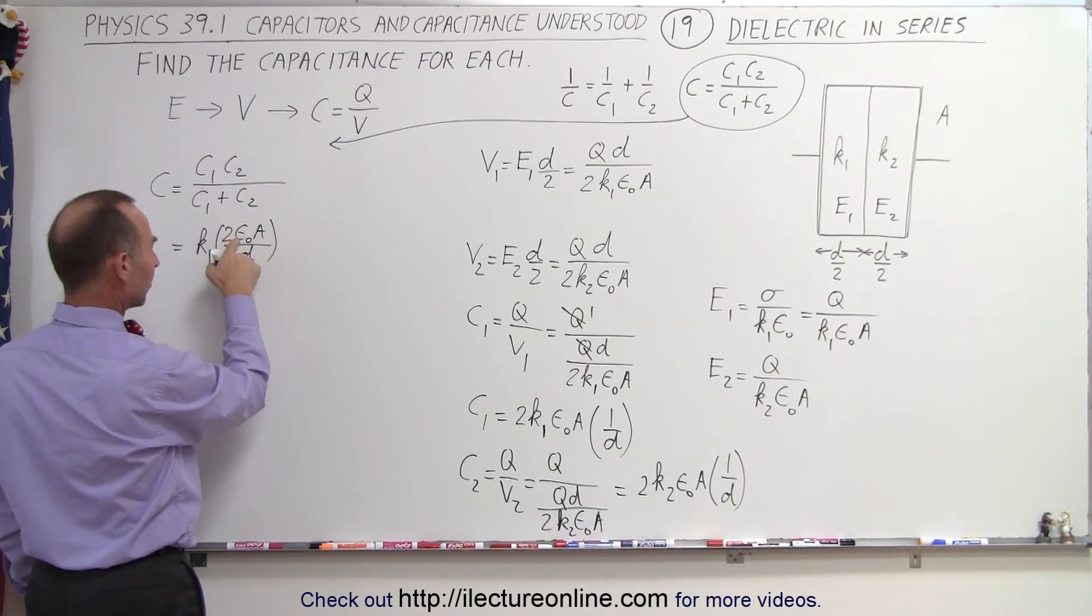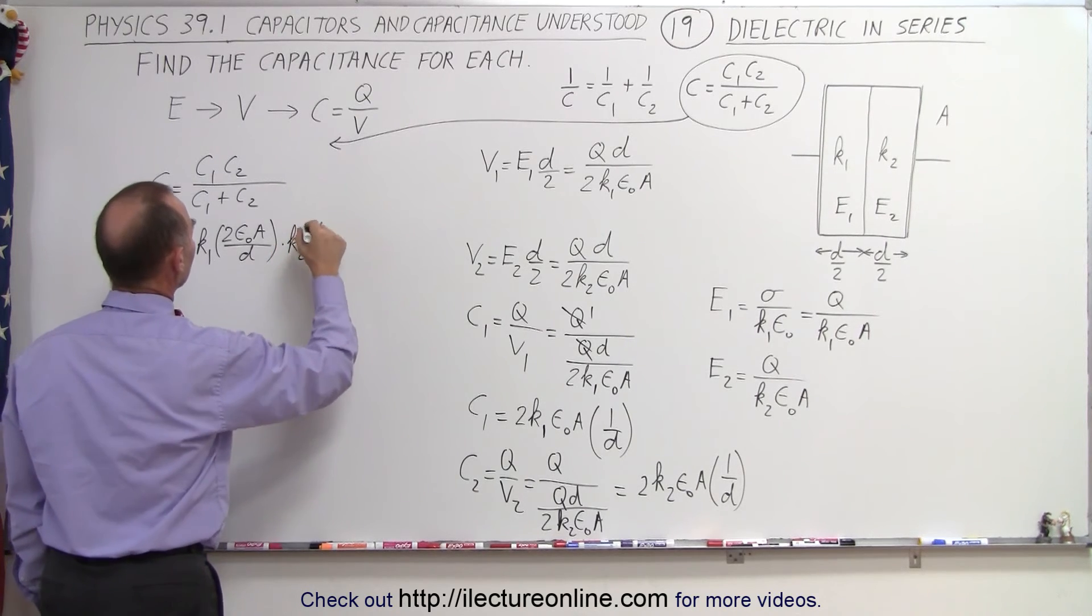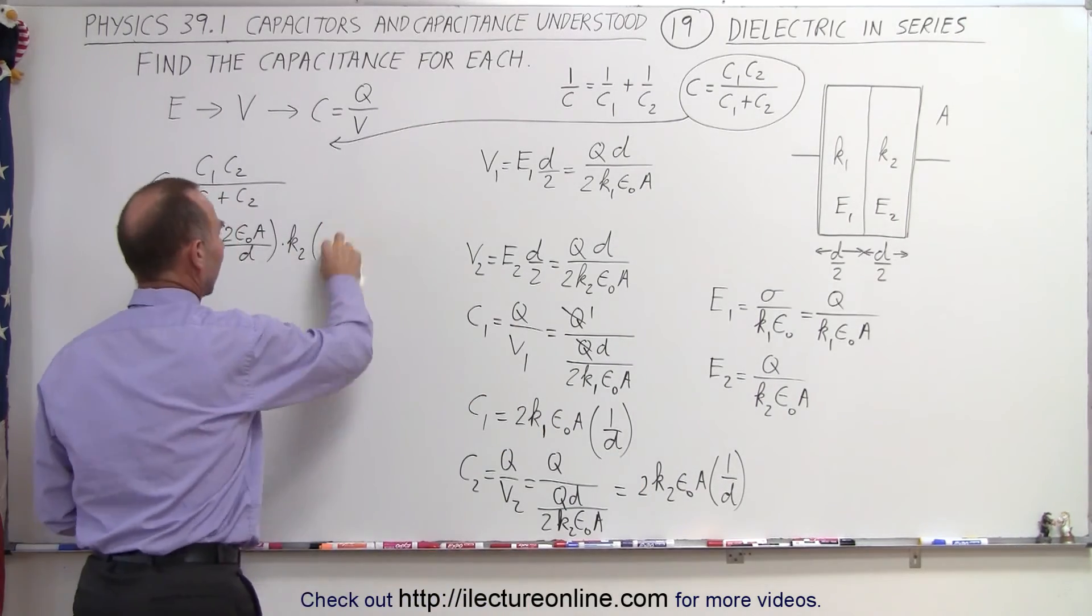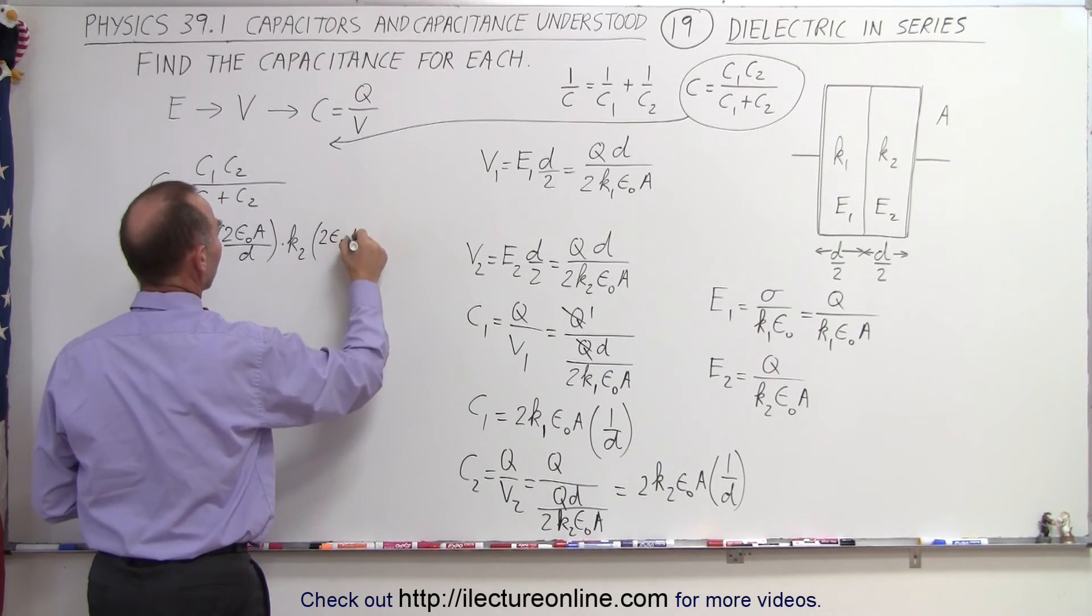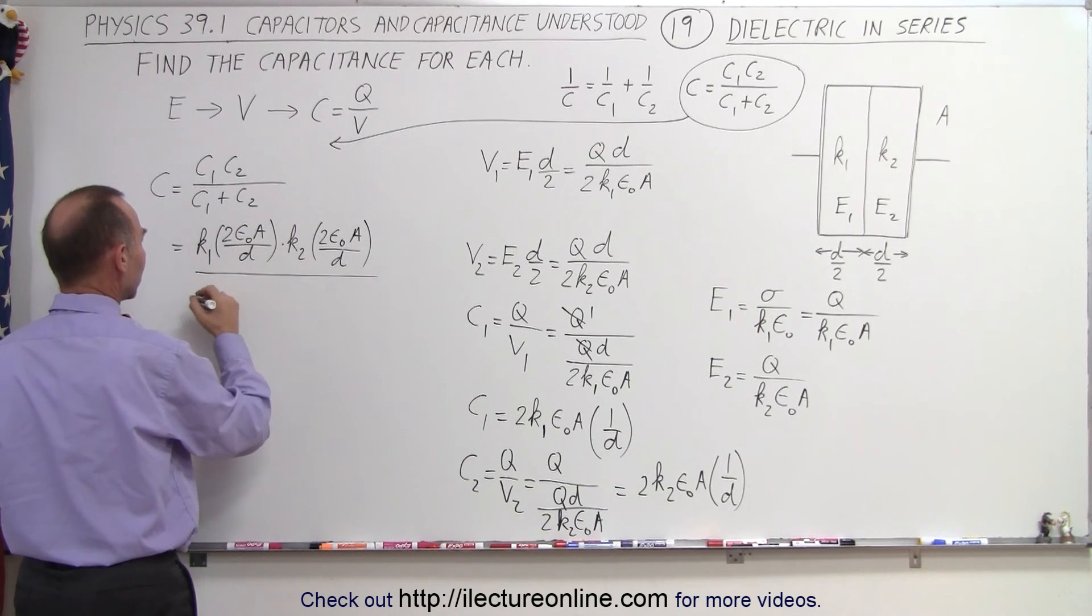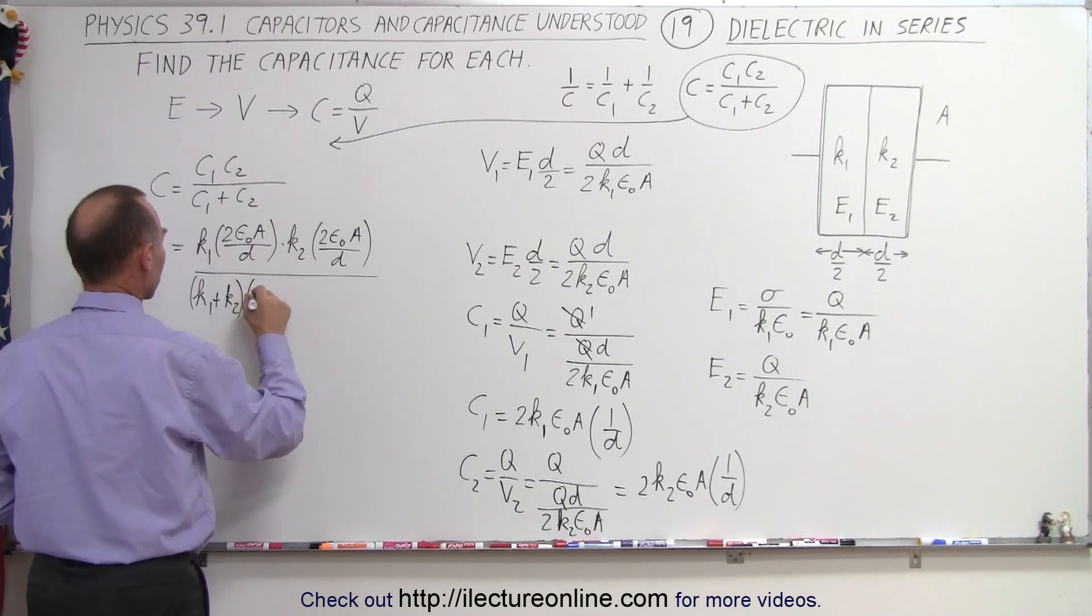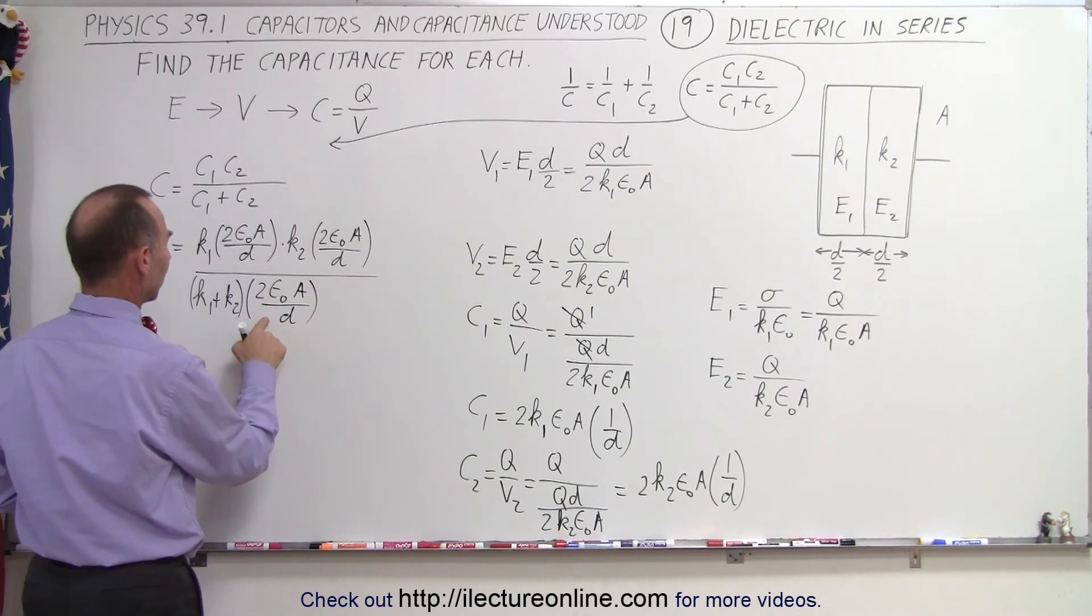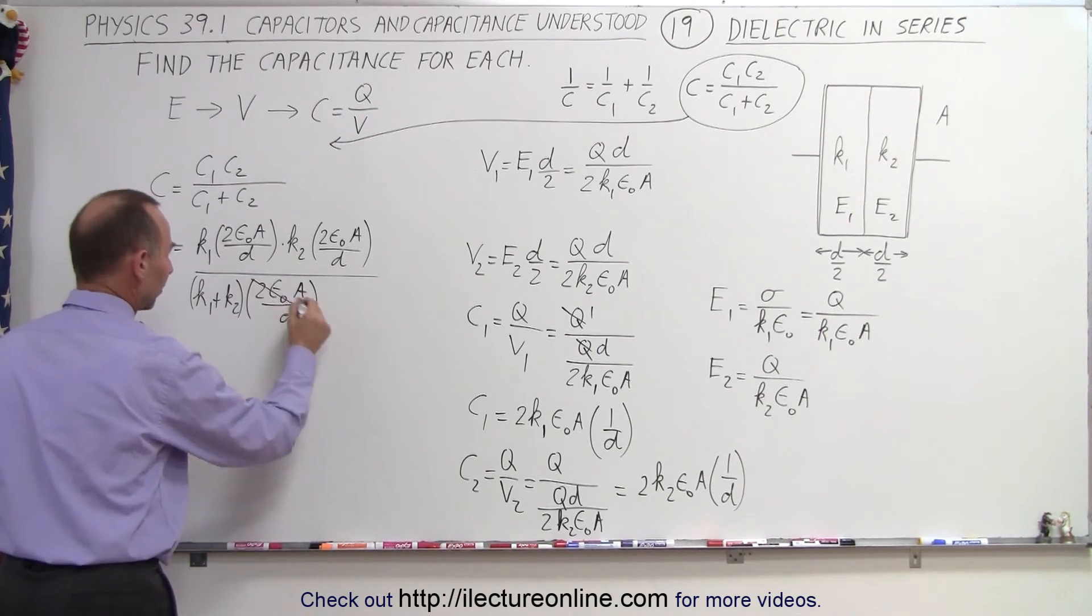So I have k1, I have 2 epsilon naught A and d times k2, and then we have C2, so that will be 2 epsilon naught A over d, divided by the sum. So I'm going to factor out a k1 and k2, so I end up with k1 plus k2 times 2 epsilon naught A over d. And I only have one of those, each with a k1 plus k2. So that works, so now I can cancel this one with this one.